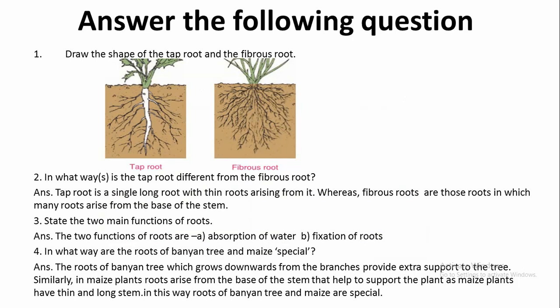The next question is: In what ways is the tap root different from the fibrous root? Answer: A tap root is a single long root with thin roots arising from it, whereas fibrous roots are those in which many roots arise from the base of the stem.